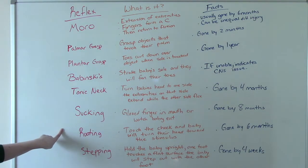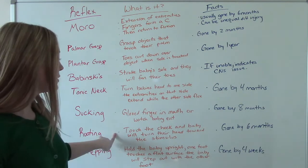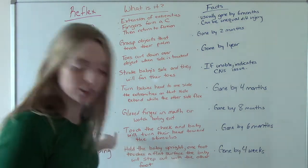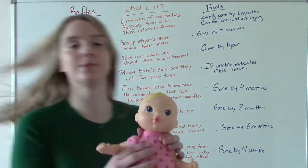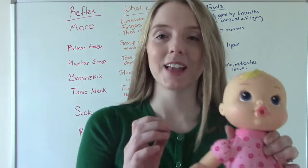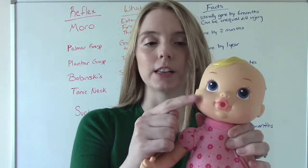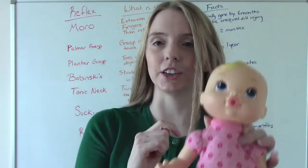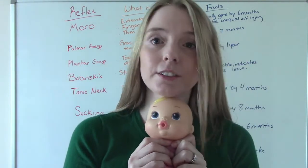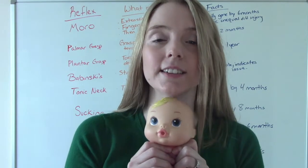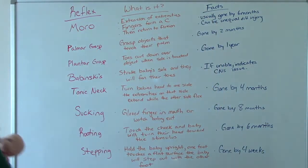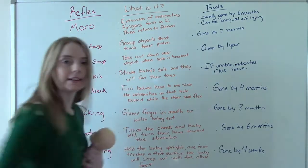The rooting reflex: we're going to touch baby's cheek, and baby will turn towards the stimulus. I have my baby here, and I'm going to gently brush their cheek, and then they're going to turn their head towards where I was touching, because they're looking for food. These are survival instincts, reflexes they need to survive—sucking and rooting. This is gone by six months.